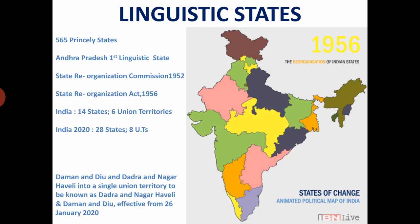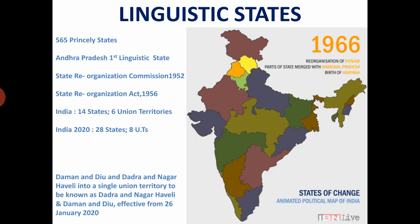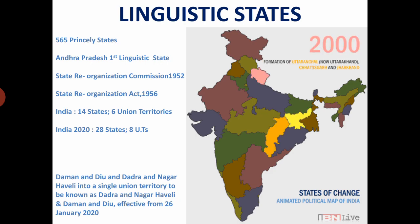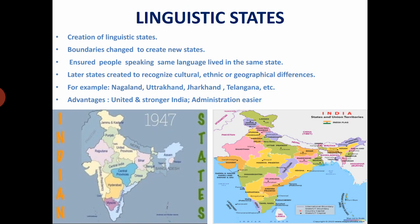This led to the demand for linguistic states from other parts of the country too. The State Reorganisation Commission was set up by the government and on its recommendation, state boundaries were changed along linguistic lines. It led to the creation of 14 states and six union territories under the State Reorganisation Act. New states were created to ensure people speaking one language lived in the same state. Later on, states were also created on the basis of cultural, geographical and ethnic differences. Undoubtedly, formation of linguistic states has made India more united and stronger.